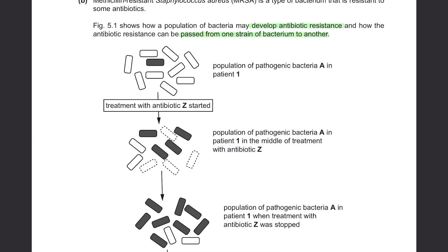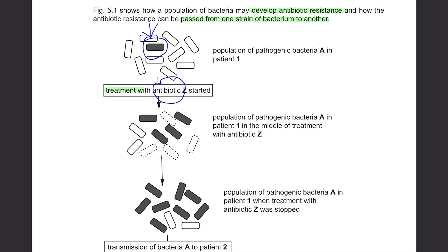Firstly, there was one bacterium that is resistant to antibiotic Z, and the rest were not resistant. So when they first started treatment with antibiotic Z, the other bacteria were affected by this antibiotic, but the shaded one was not affected since it's resistant to it. Then in the middle of treatment, you can see that the one resistant to antibiotic Z has multiplied and became four, but the ones not resistant have disappeared and started dying as shown in dotted lines.